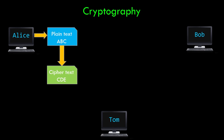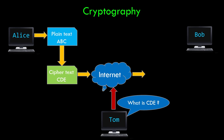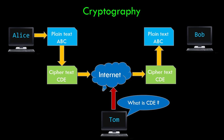This process is called encryption. We assume that Bob knows this technique. After applying it, Alice converts the plain text to ciphertext CDE and sends it over the network. As usual, Tom captures this message, gets CDE, and thinks he's got something confidential — but that's not the original message. Meanwhile, as the message reaches Bob, he replaces each character with two positions preceding to get the original message ABC. This process is called decryption. In this simple way, confidentiality was achieved as the message was safely transferred between valid users.